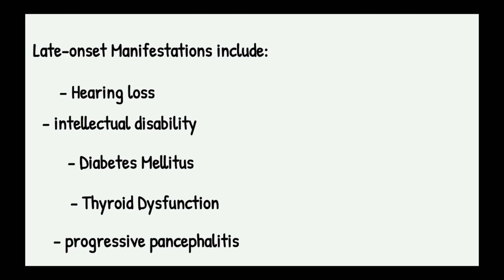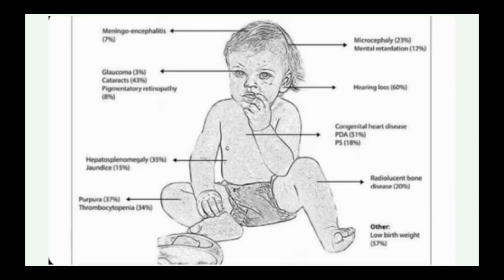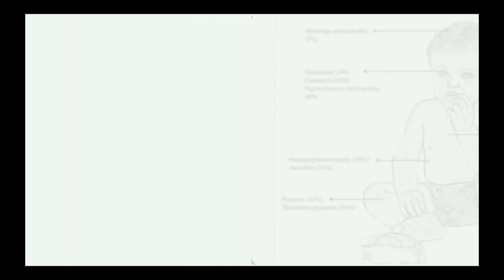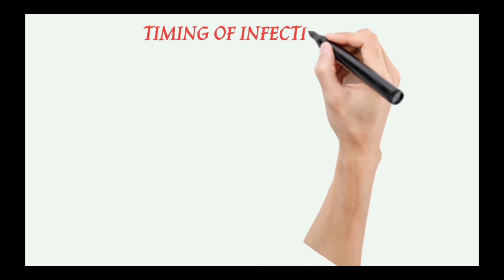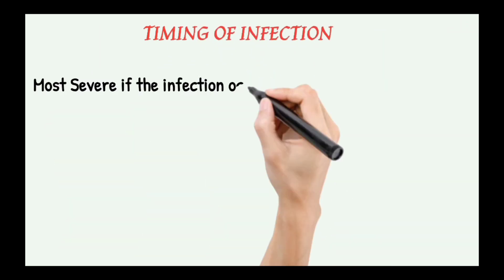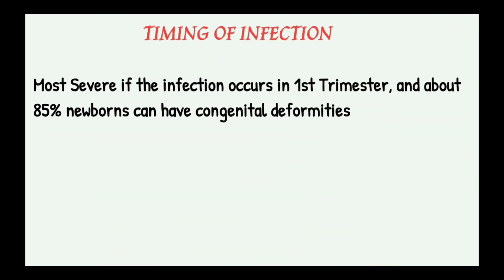These are some of the late onset manifestations. If you pause this video, you'll find it covers almost all clinical features mentioned — both early onset and late onset. Now, regarding the timing of infection in Congenital Rubella Syndrome.